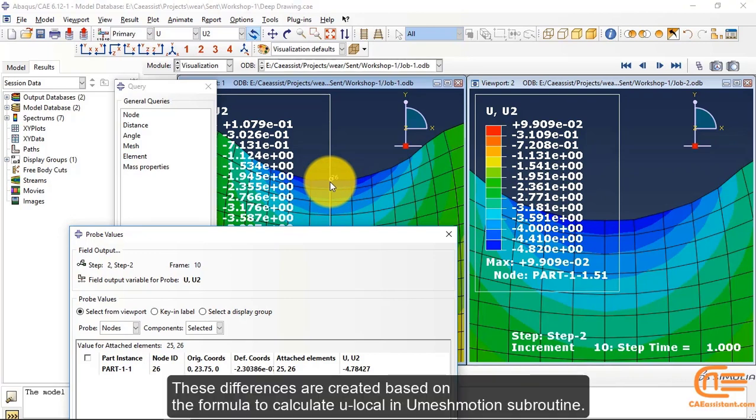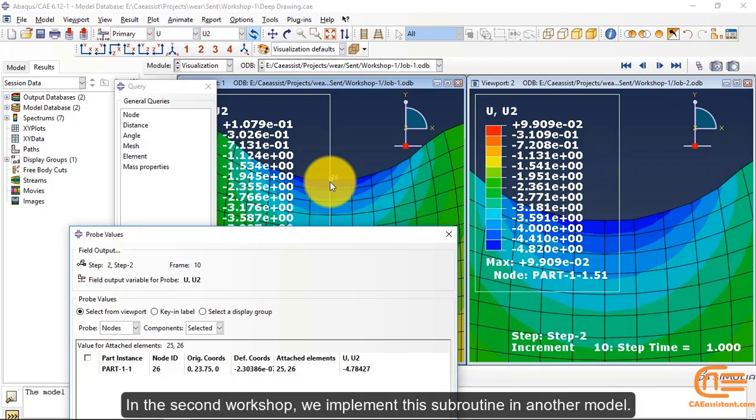These differences are created based on the formula to calculate U-local in UMESHMOTION subroutine. In the second workshop, we implement this subroutine in another model.